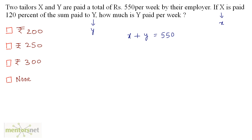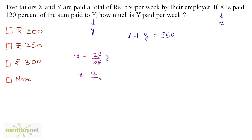Another thing that is given is x is paid 120% of the sum paid to y. So x is equal to 120% of y, that means 120 upon 100 times y. The zeros get cancelled out, so x is equal to 12 by 10 times y.